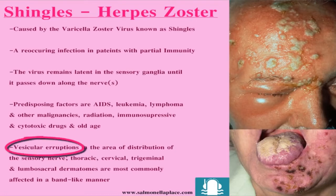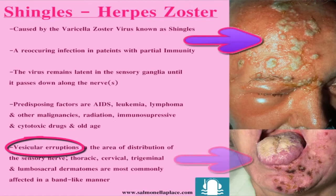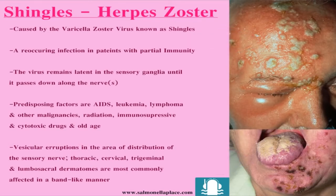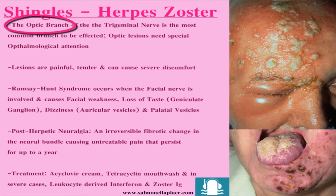The vesicular eruptions visible in the pictures are distributed within the area of the sensory nerve in question. They can appear on the thoracic, cervical, trigeminal, and lumbosacral dermatomes, affecting the area in a band-like manner. The ophthalmic branch, which is the first branch of the trigeminal nerve, is the most common one to be affected.